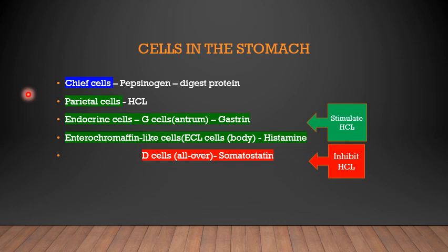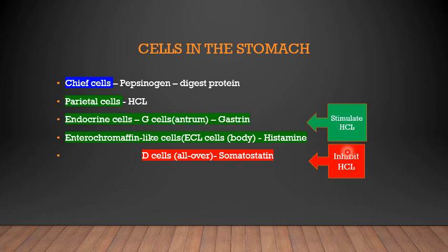The chief cells produce pepsinogen which is important for the digestion of proteins. The parietal cells produce hydrochloric acid. The endocrine cells — the ECL cells or enterochromaffin-like cells — produce gastrin, histamine and also somatostatin. Gastrin and histamine are stimulatory to the production of HCl, whereas somatostatin inhibits the production of hydrochloric acid.